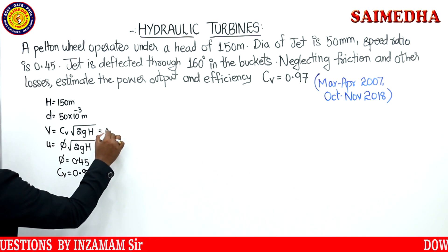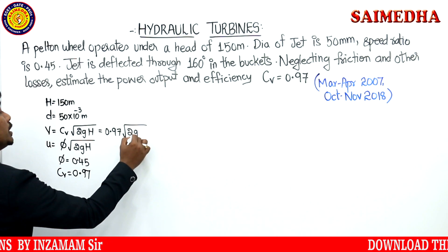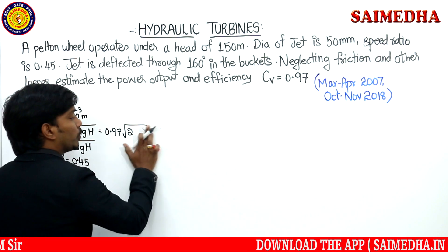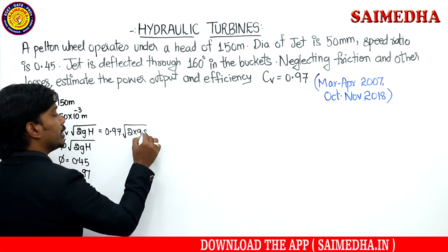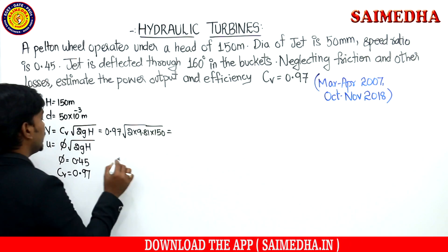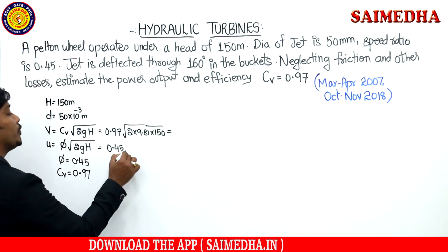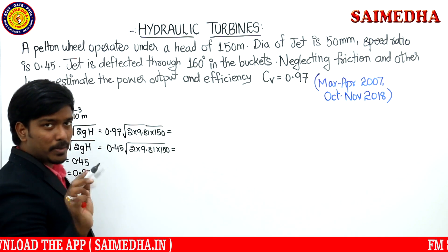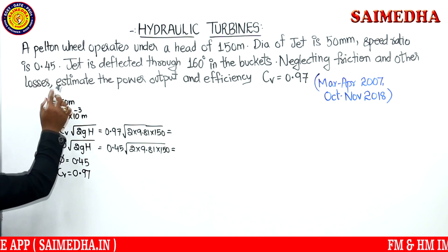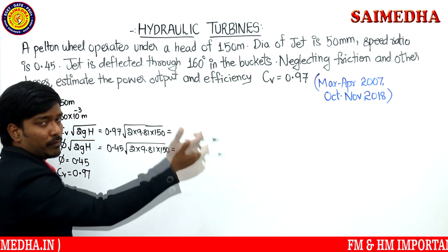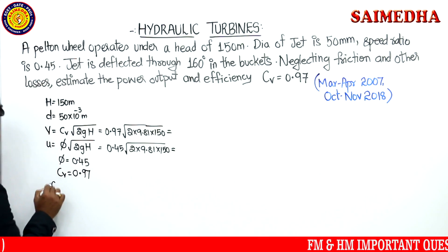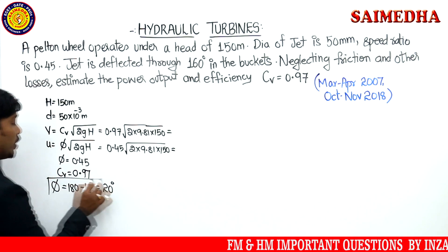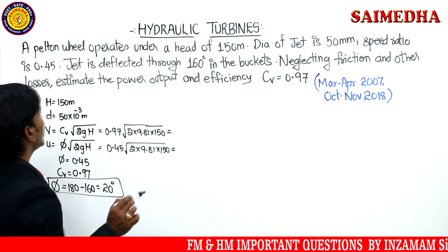Substituting: velocity of jet V = CV × √(2GH) = 0.97 × √(2 × 9.81 × 150). Blade velocity U = φ × √(2GH) = 0.45 × √(2 × 9.81 × 150). The power formula is: Power = ρ × A × V × (V − U) × (1 + cos φ) × U. Area A = π/4 × d² = π/4 × (50 × 10⁻³)². Density ρ = 1000 kg/m³.